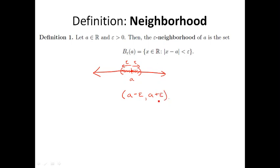The notation I often use is B sub epsilon; the book will use V sub epsilon. It's the same exact set, just written a different way.